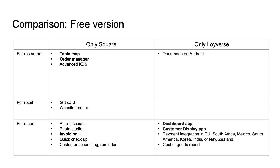So let's start comparing the free version. This is a list of features which only Square's free version has and only Royverse's free version has. There are many features not listed in this table, but generally both POS systems have the general features required in small shops. Let me pick up some of the key features in Square and Royverse free version.